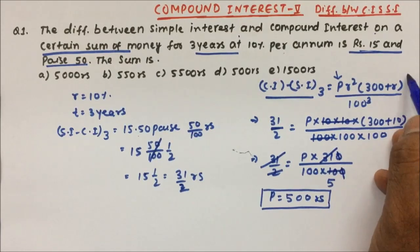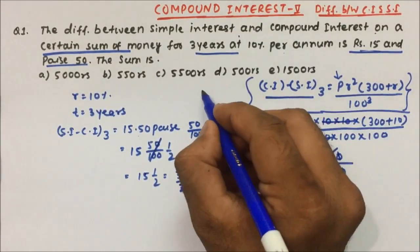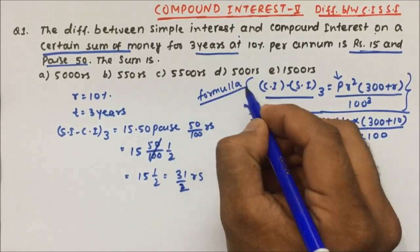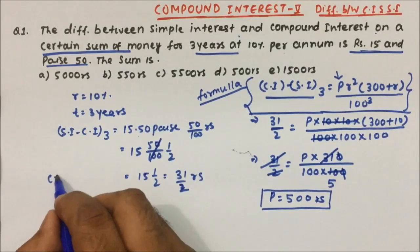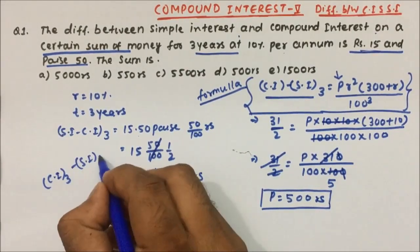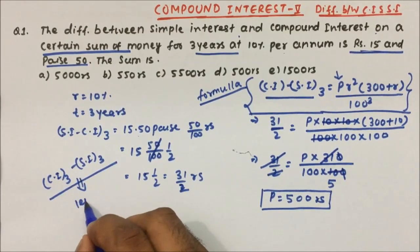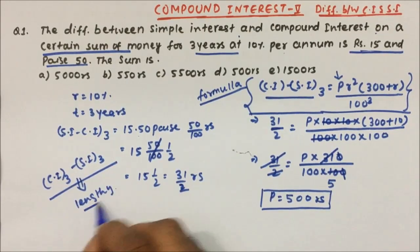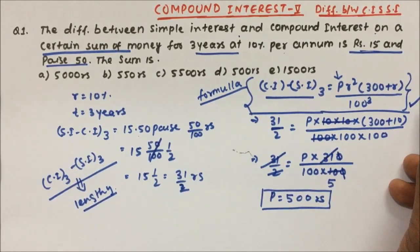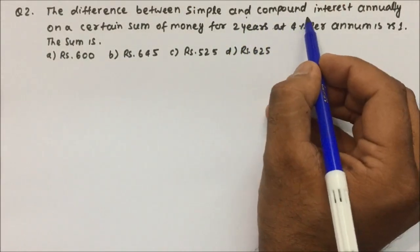This is the formula for the difference between compound interest and simple interest for 3 years, and you have to keep it in mind. If you don't use this formula, the calculation becomes very lengthy — you would have to find compound interest for 3 years step by step. So please remember the formula so we can solve problems in very less time.